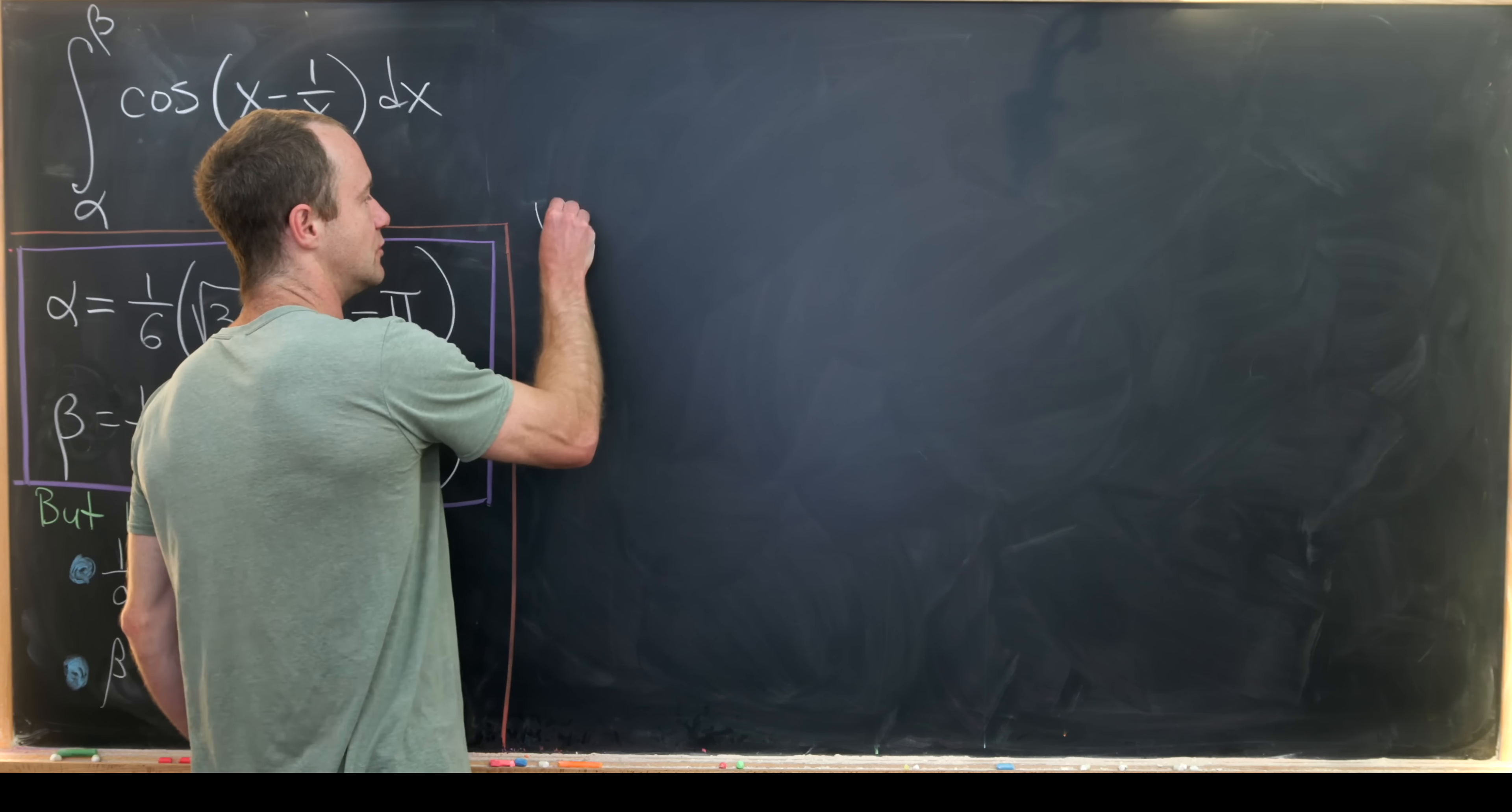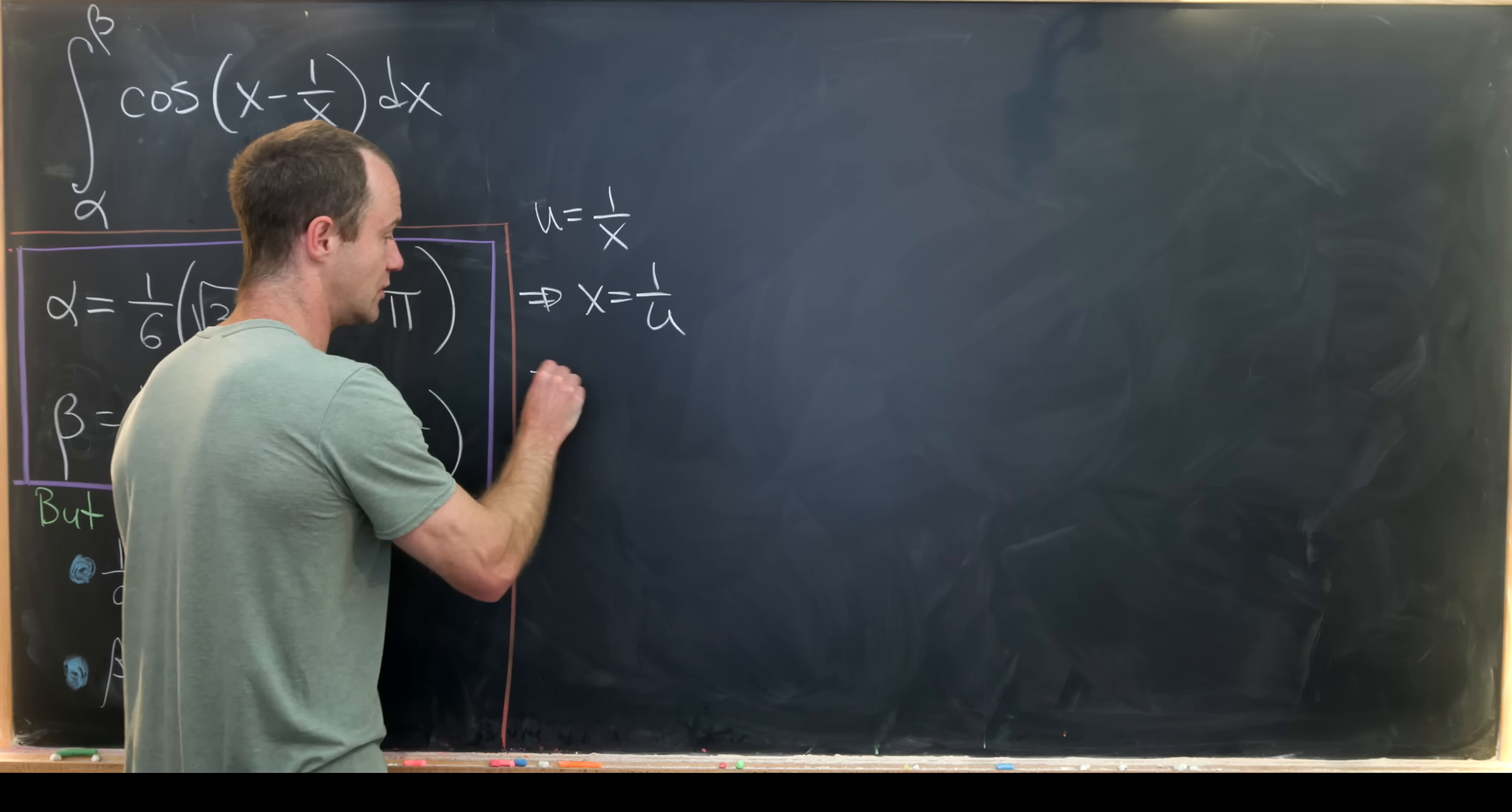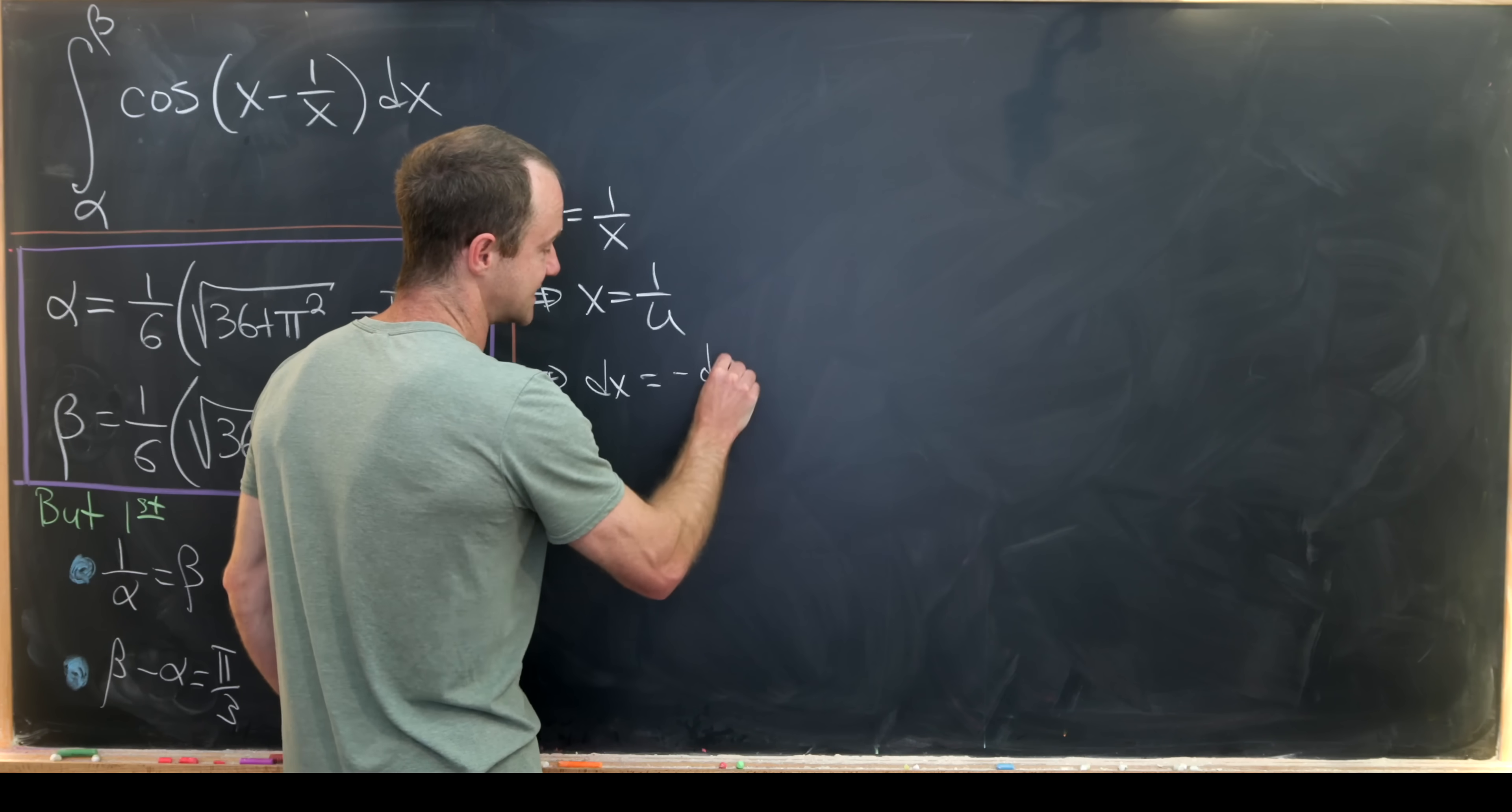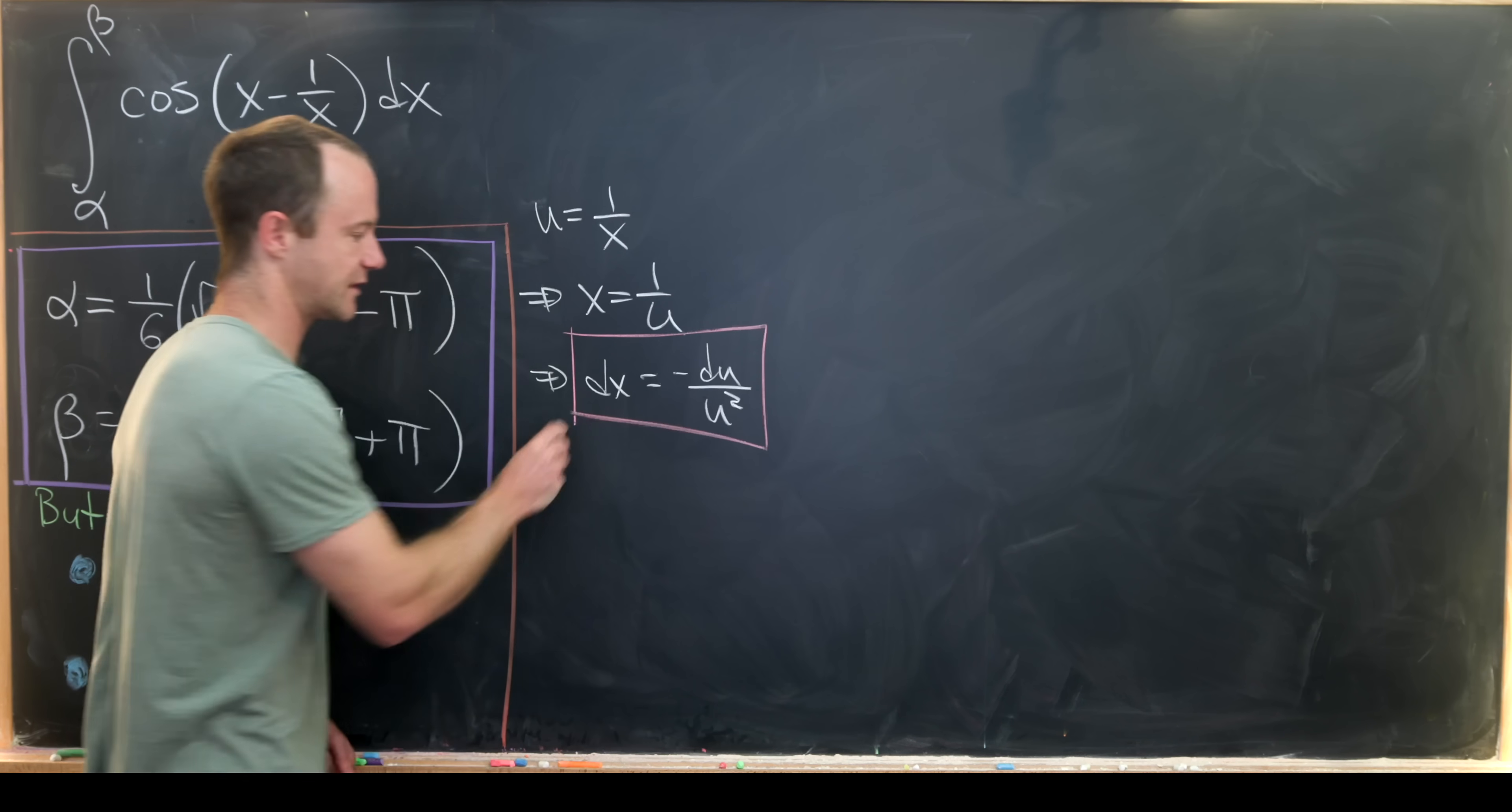So if u equals 1 over x that's the same thing as saying that x is 1 over u, which means dx is equal to minus du over u squared, just using the general power rule there.